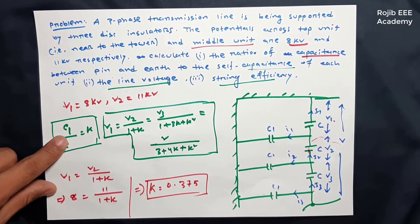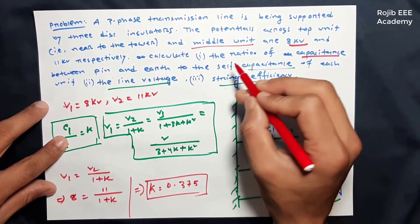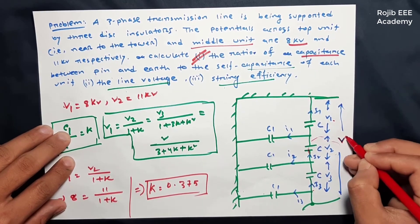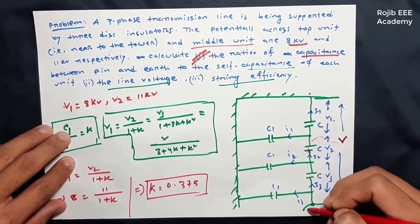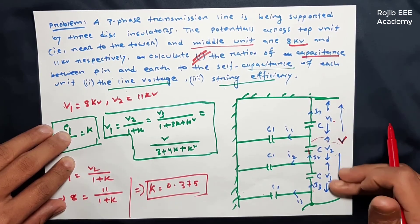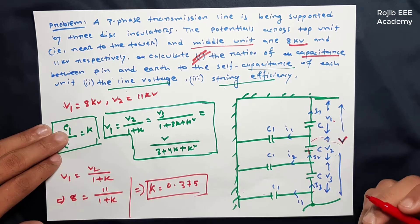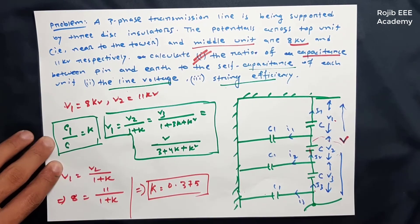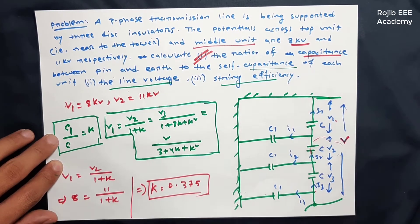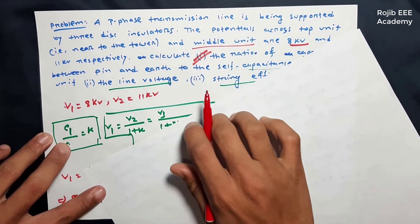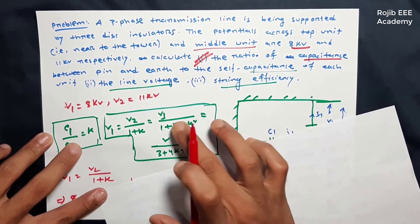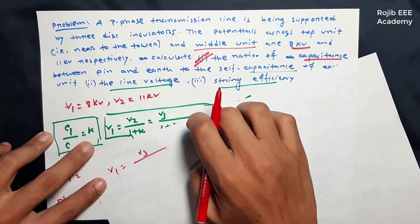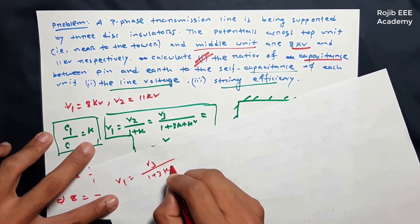So V1 is equal to V2 divided by (1 plus K). Also, V2 is equal to V1 times (1 plus K), and V3 is related by V2 plus K terms. We will now proceed to the total line voltage calculation, using V3.